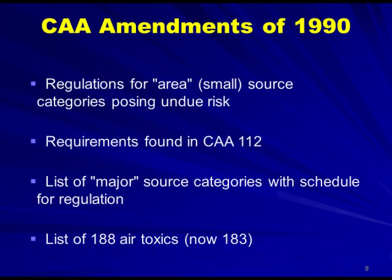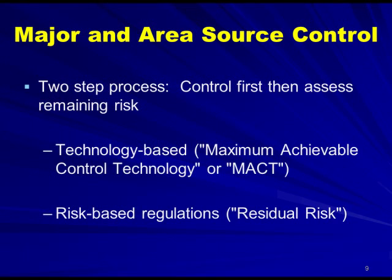The 1990 Clean Air Act Amendments dramatically increased EPA's authority to regulate air toxics. We have regulations for area small sources and small source categories that pose an undue risk. The requirements and the authority can be found in the Clean Air Act in Section 112. There's also a list of major source categories with a schedule for regulation. The Clean Air Act Amendments of 1990 listed 188 air toxics to regulate; that list is now down to 183, as five chemicals have been delisted.